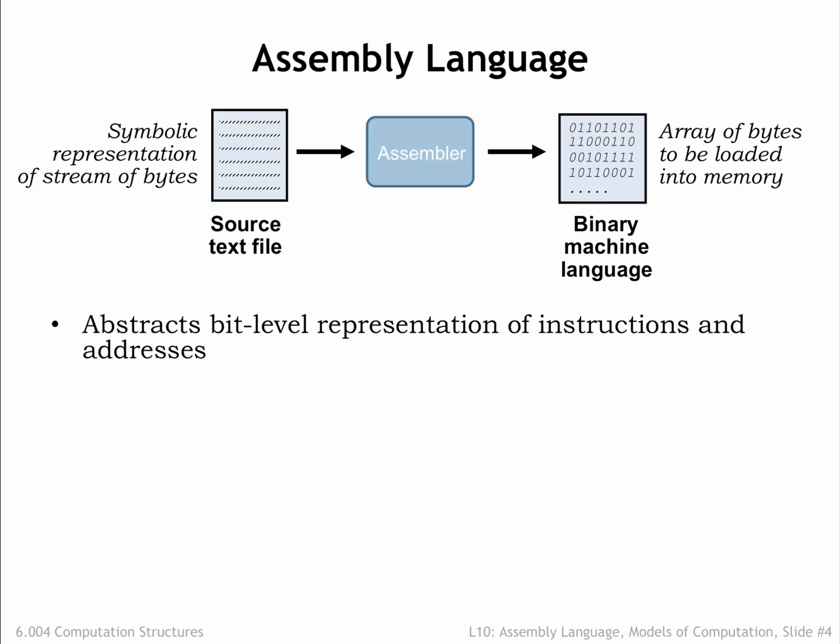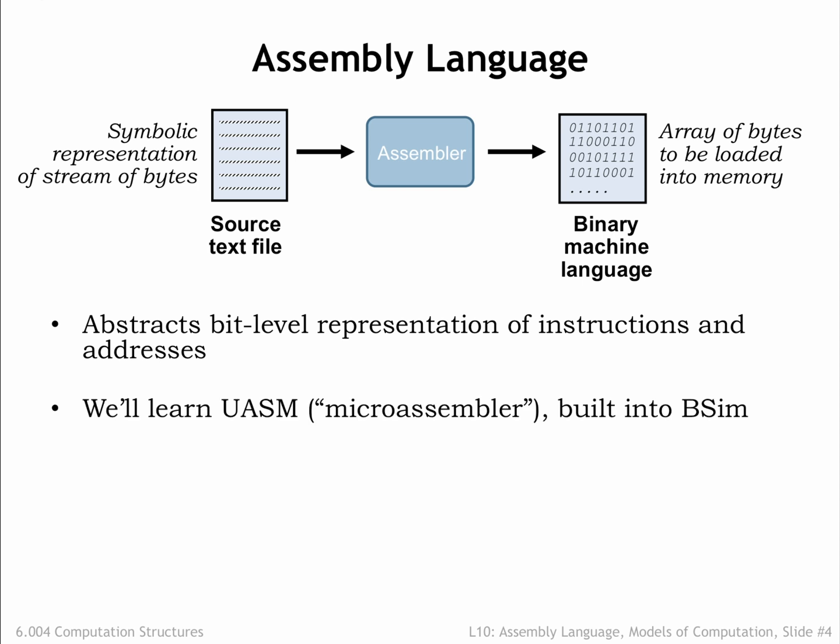Back to assembly language, which we'll use to shield ourselves from the bit-level representations of instructions and from having to know the exact location of variables and instructions in memory. A program called the Assembler reads a text file containing the assembly language program and produces an array of 32-bit words that can be used to initialize main memory. We'll learn the UASM assembly language, which is built into BSIM, our simulator for the beta instruction set architecture.